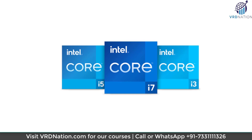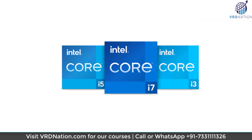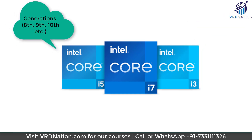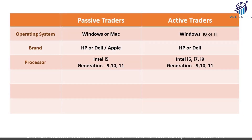As the numbering goes from 3 to 5, 7, and 9, the higher you go the better the performance. Intel has also added generations — 8th, 9th, 10th, 11th — and again, the higher the generation, the better. If you go with Intel i5 at 9th generation or above, it will perfectly serve both active and passive traders. You don't need more than that, but if you have a higher budget you can go to i7 or even i9. Remember to stay above the 9th generation.